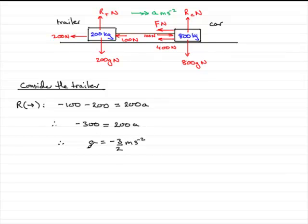We would expect A to be a negative number because the system is decelerating. It's decelerating at a rate of 3 over 2 — one and a half meters per second per second — but the acceleration is minus 3 over 2.